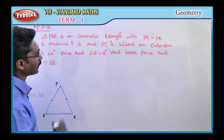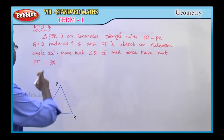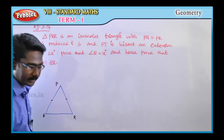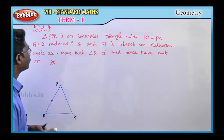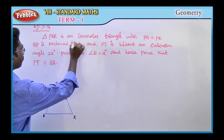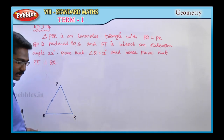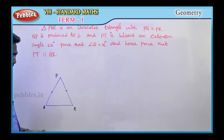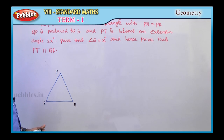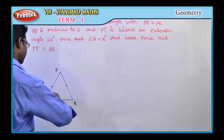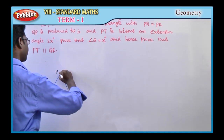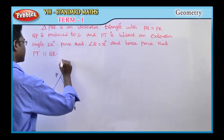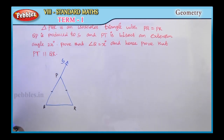First condition: PQR is an isosceles triangle with PQ equal to PR. Second, QP is produced to S. The QP line is produced to S, and this is the point S.